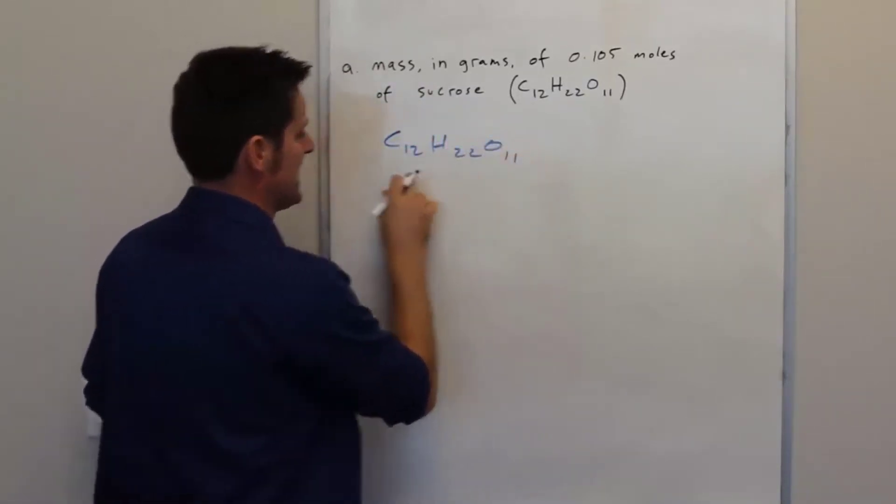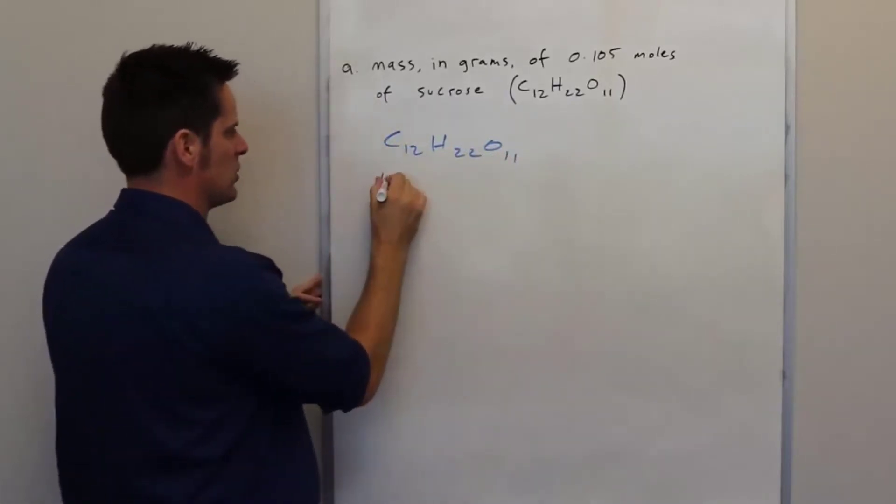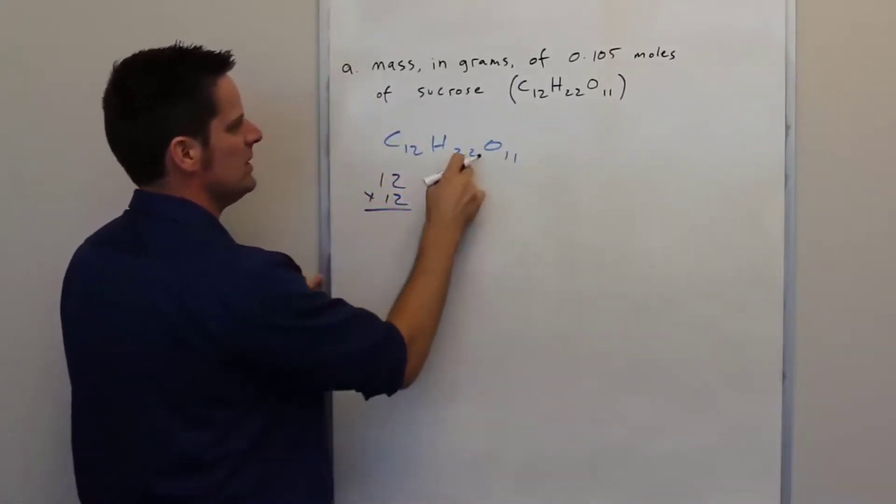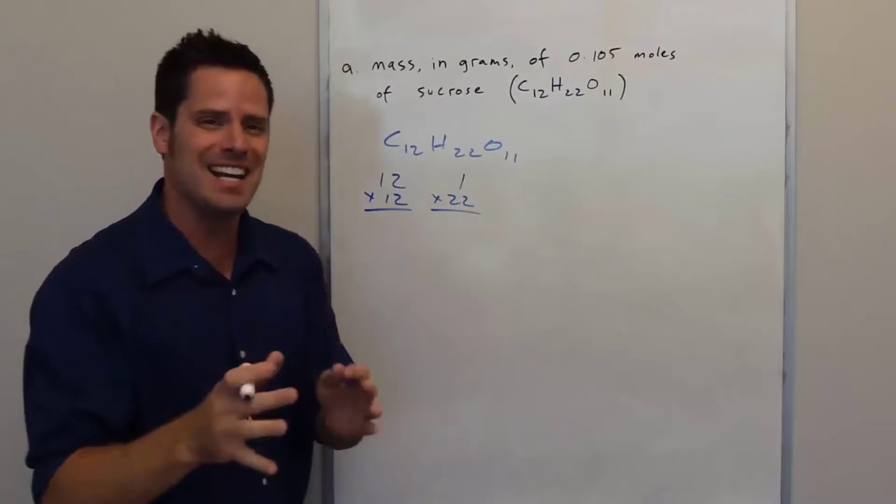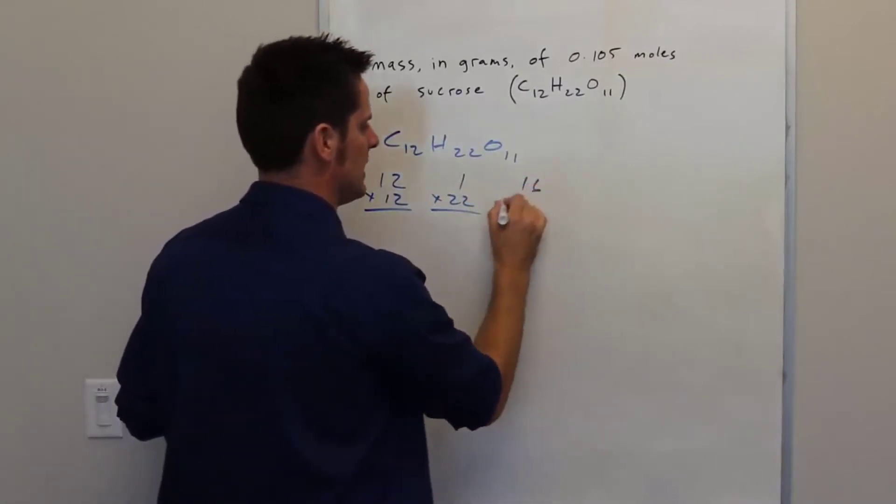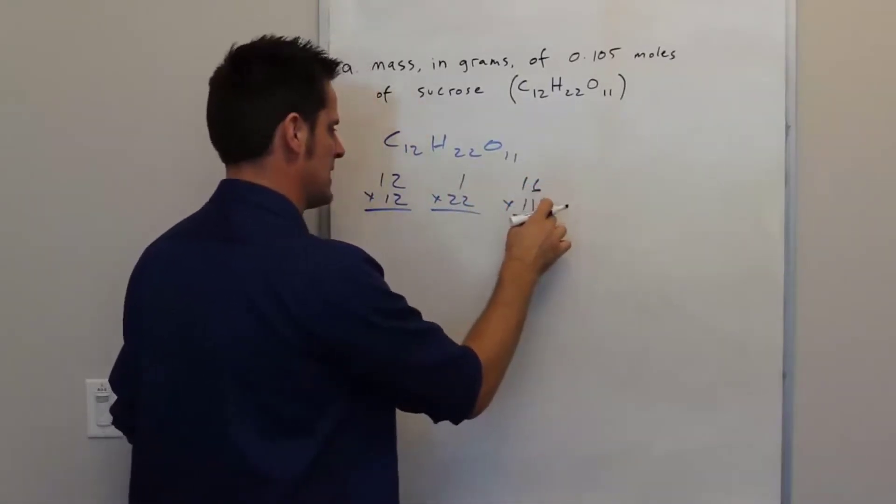We should remember that each carbon atom weighs 12 and there are 12 of them, so I'll write 12 times 12. Each hydrogen atom weighs 1 and there are 22 of them, so I'll write 1 times 22. And each oxygen atom weighs 16 and there are 11 of them, so I'll write 16 times 11.